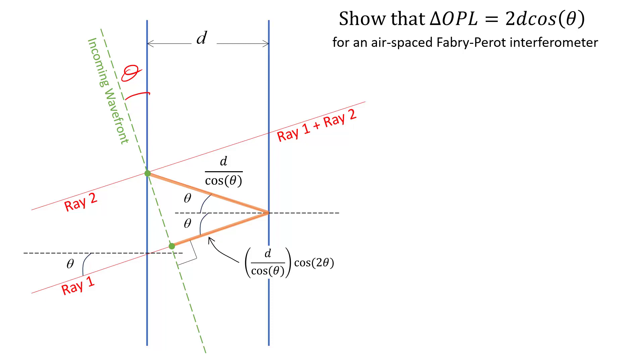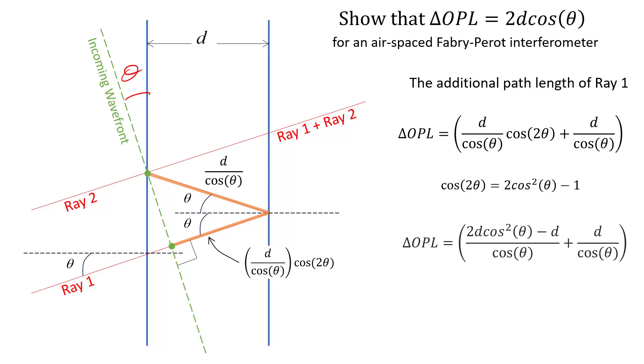And so the additional optical path length that ray 1 goes through before recombining with ray 2 is the sum of those two segments. Invoke the double angle formula. Put it in for cosine of 2 theta and simplify. And the d over cos theta's go away. And you're left with a difference in optical path length of 2d cos theta. So that is why the difference is 2 times d times cos theta.